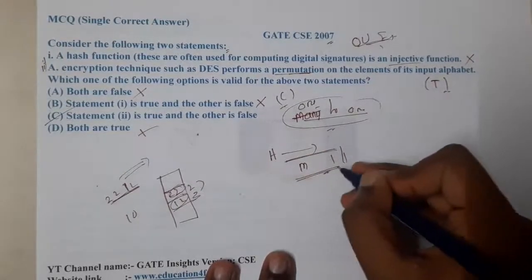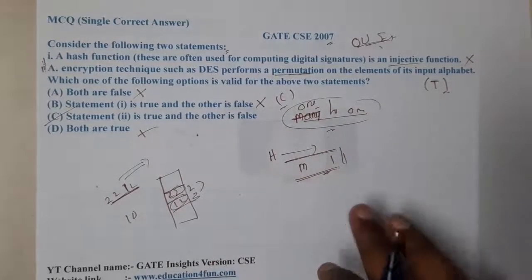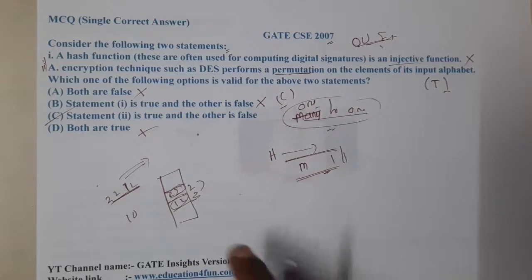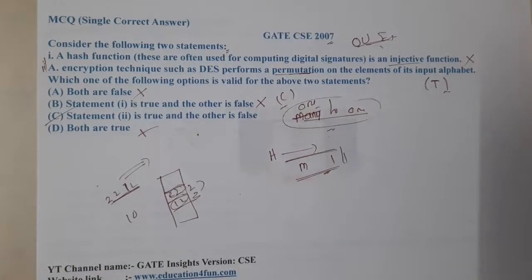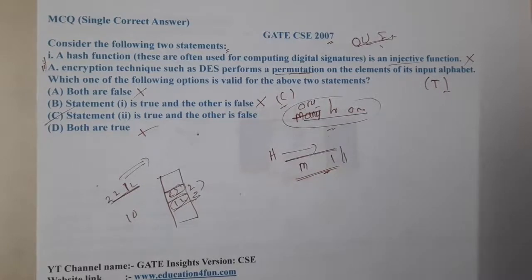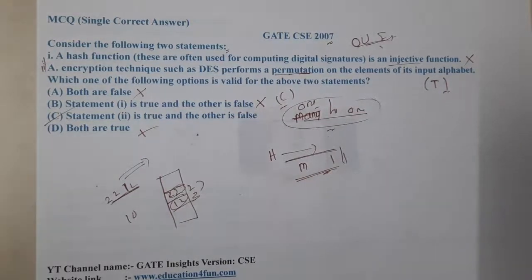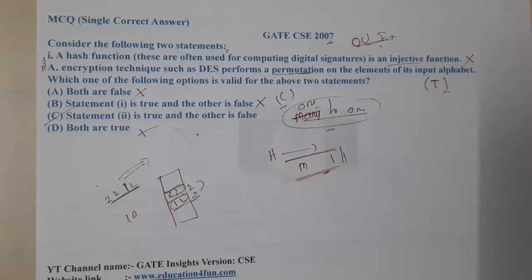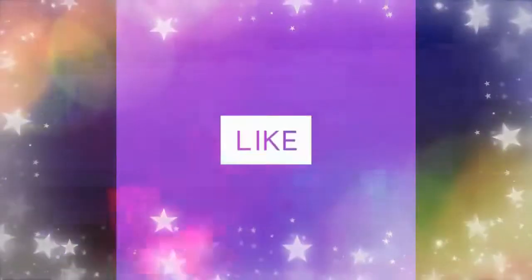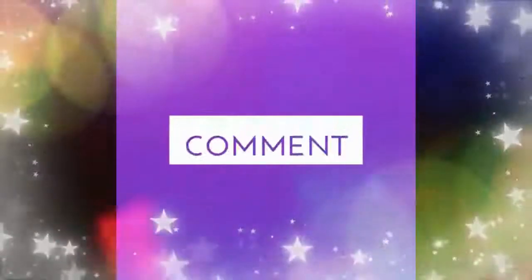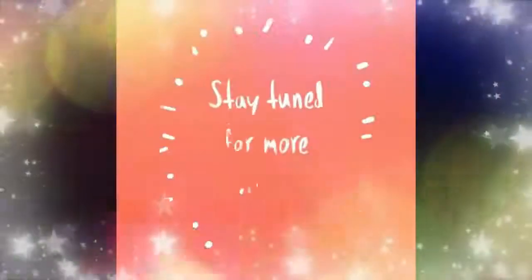So injective means one-to-one, but in some situations hashing may result in many-to-one due to collisions. There are also algorithms that can achieve one-to-one hashing. With that conclusion, statement two is true and statement one is false, so C remains the correct answer. I hope everyone got a clear idea. Like, share, and subscribe for more videos!